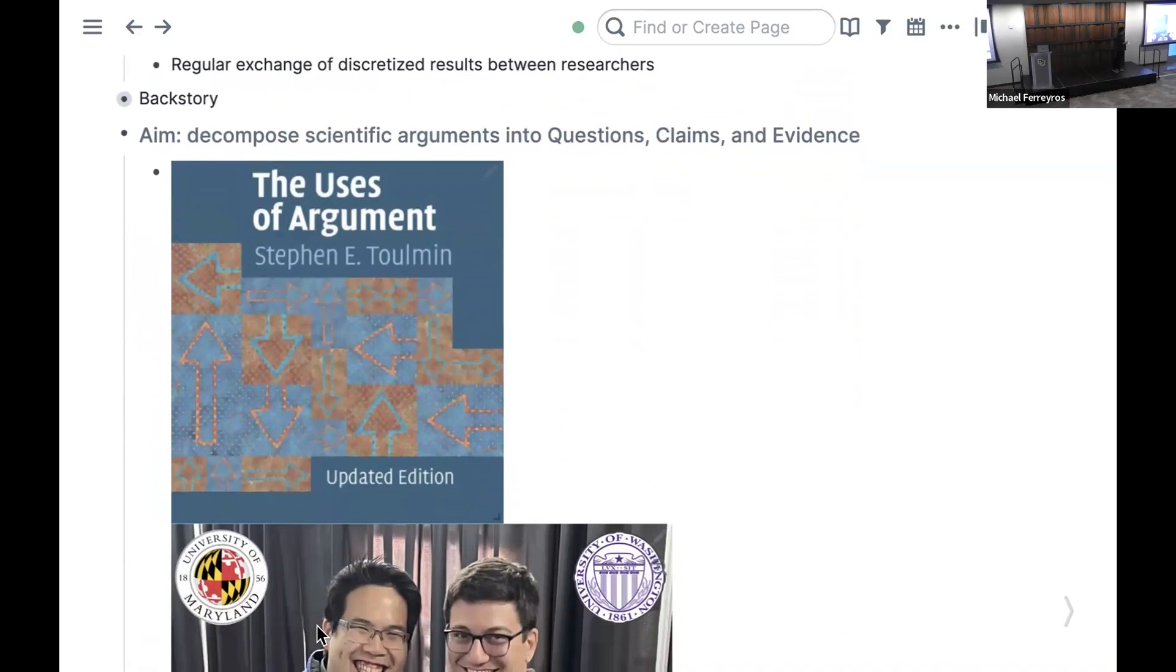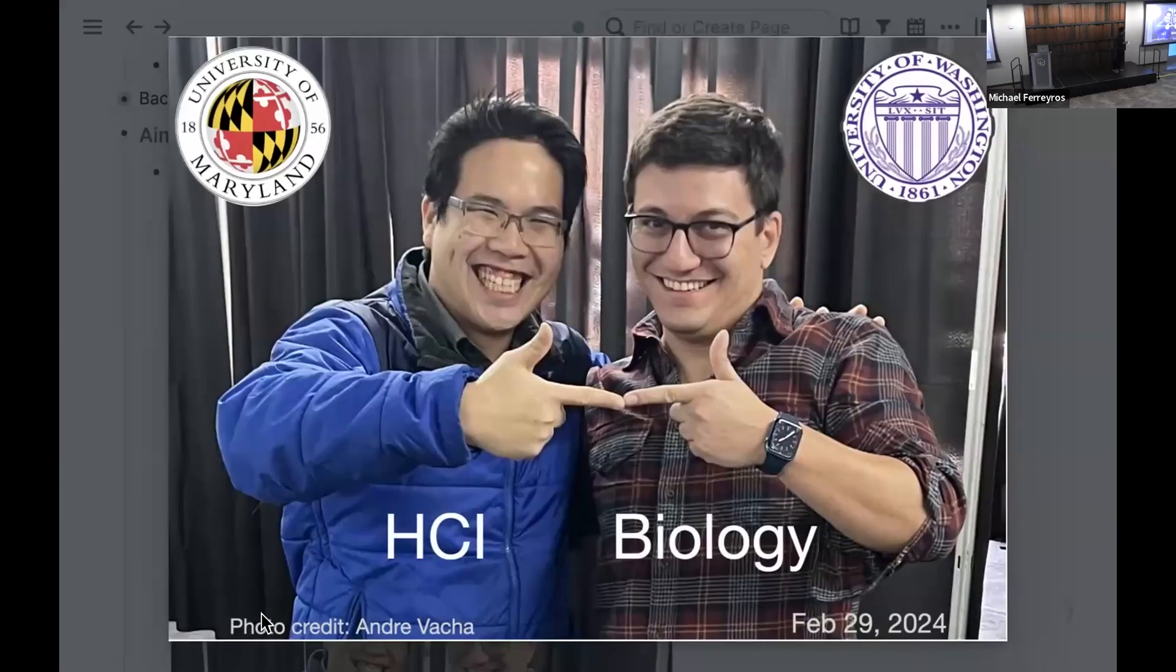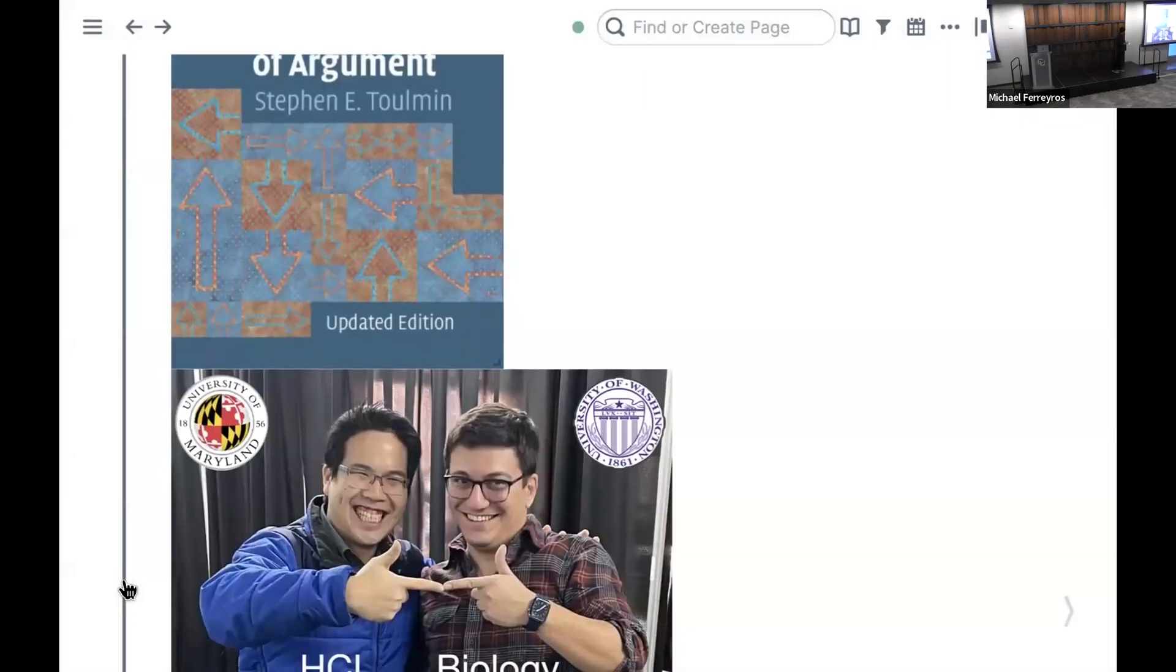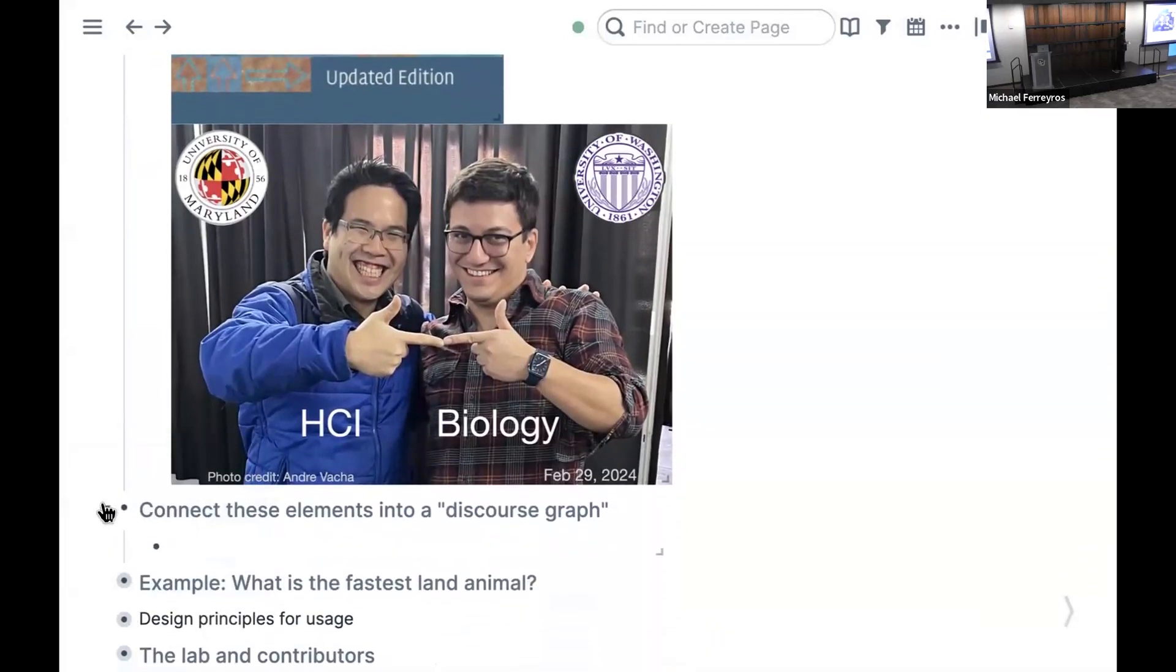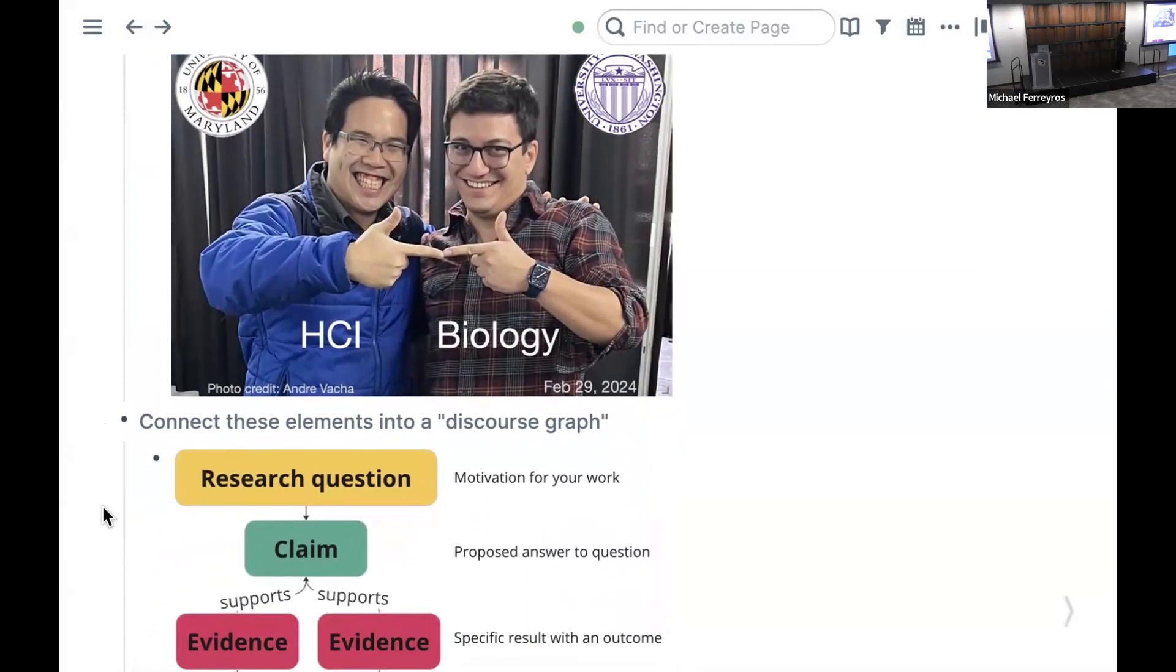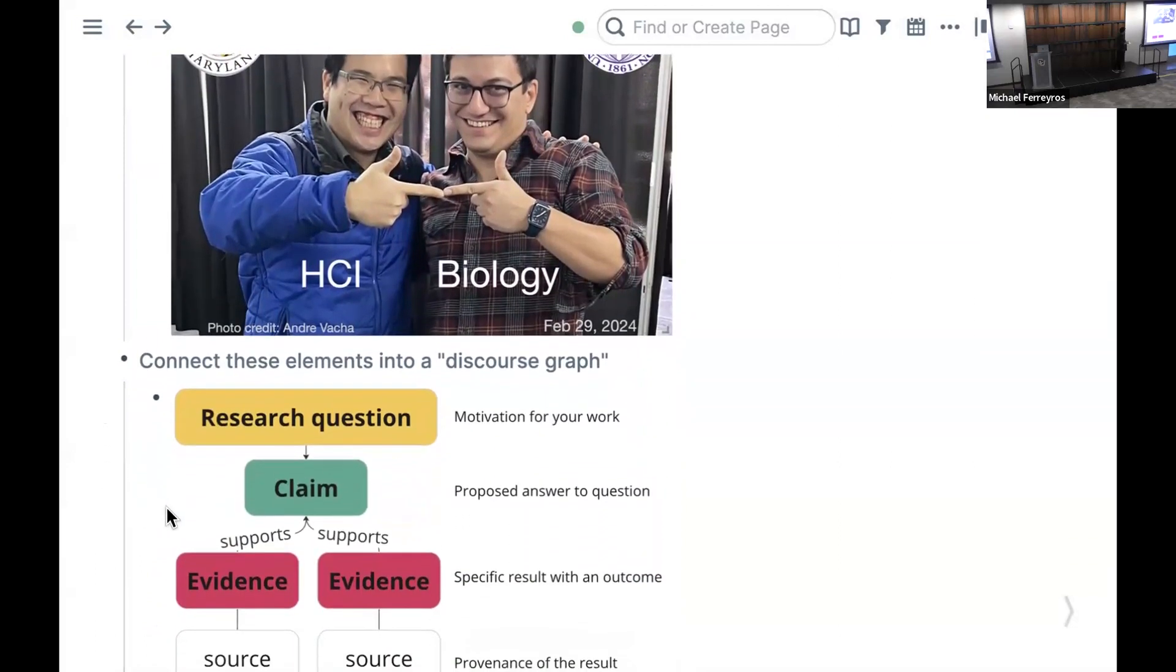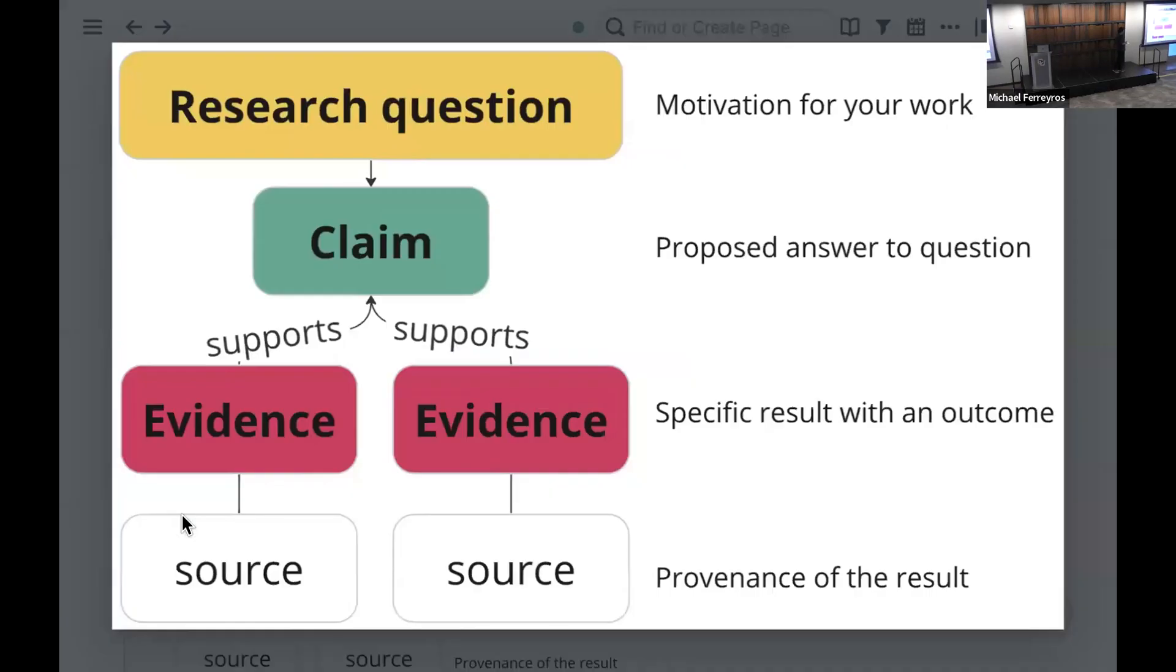This is part of a three-and-a-half-year collaboration with Joel Chan, an HCI researcher at the University of Maryland, who after three-and-a-half years I finally met in person yesterday, thanks to this meeting. Joel has built a tool to take these atomic units of science and connect them into a graph. He calls this a discourse graph. Here's our data model and the elements of the graph.